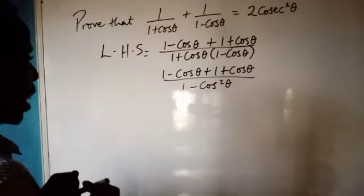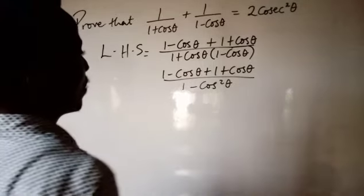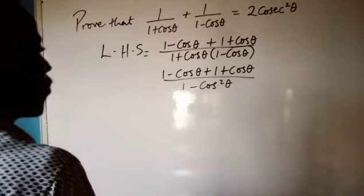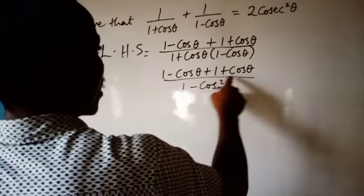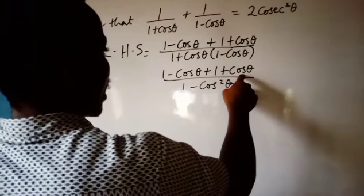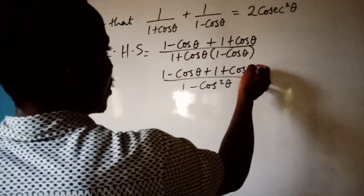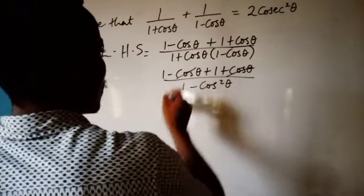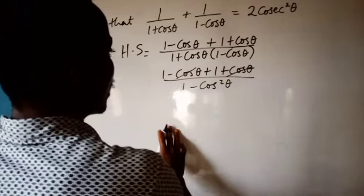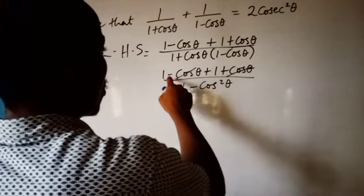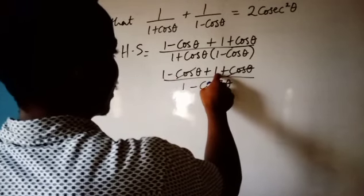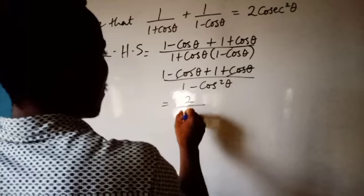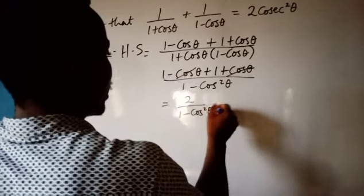Because these are difference of two squares. From here, minus cos theta plus cos theta cancels away. So we are left with 1 plus 1, which is 2, over 1 minus cos squared theta.